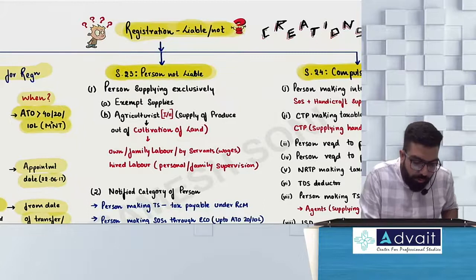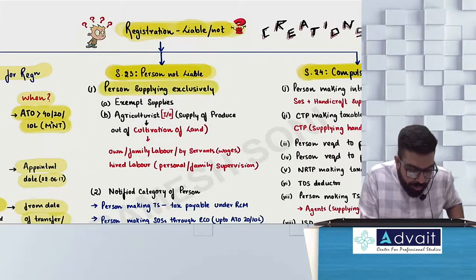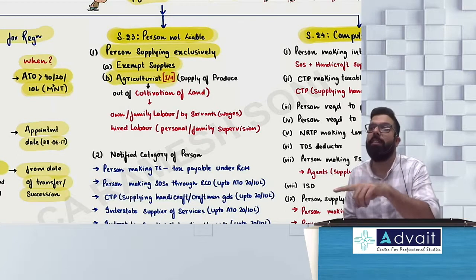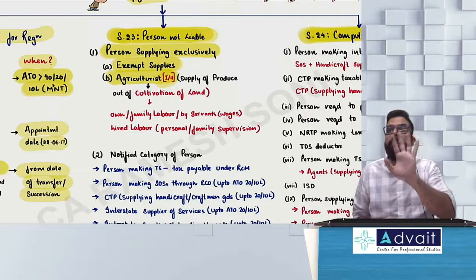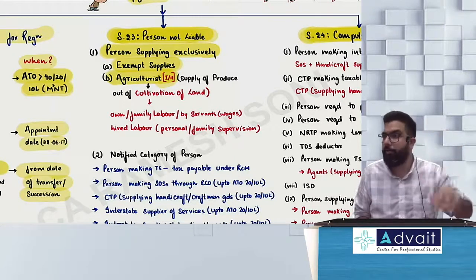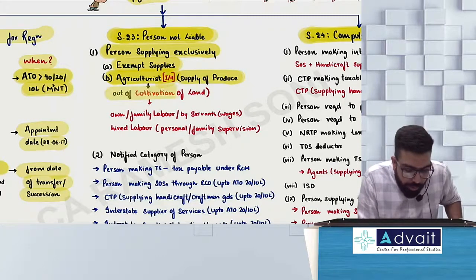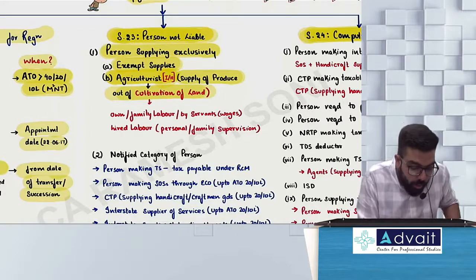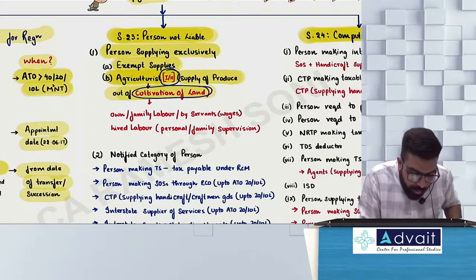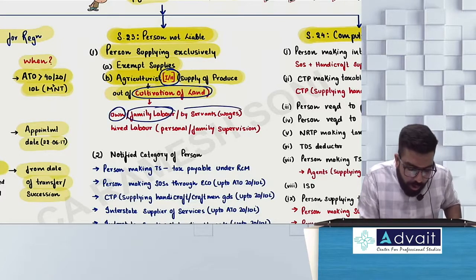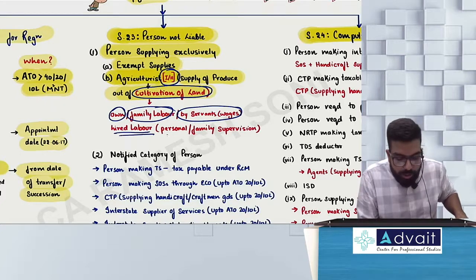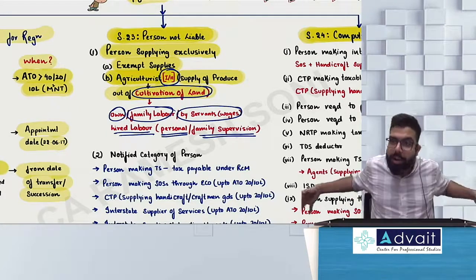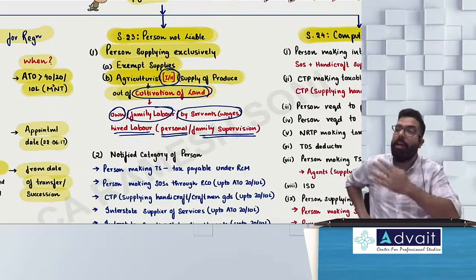The next category is section 23, which says persons who are not liable. Persons supplying exclusively exempted goods are not liable. An agriculturist is also not liable. An agriculturist is an individual or HUF — if an agriculturist is a company, this exemption will not apply and the 20 lakh or 10 lakh turnover limit will apply instead. An agriculturist is an individual or HUF who does cultivation of land either through own labour, family labour, servants on wages, or hired labour under personal or family supervision.